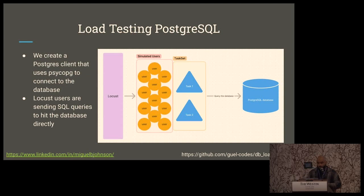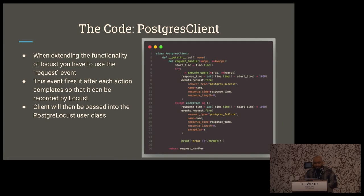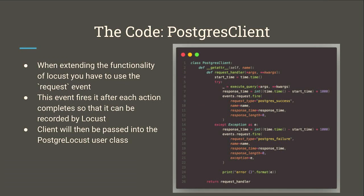Let's look at load testing for Postgres. It's very similar — basically the exact same thing. You create a task set and simulated users. The only difference is that the tasks don't hit an API endpoint or URL; they hit the database directly, actually sending queries to it. You'll create a Postgres client. When you extend Locust's functionality, you have to use the request event, which has a method called fire. It fires every time a user makes a request, tracking if it's successful, the response times, response length, etc. You pass this into the user class constructor.